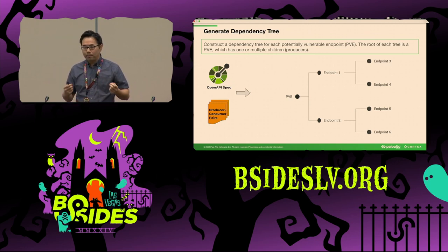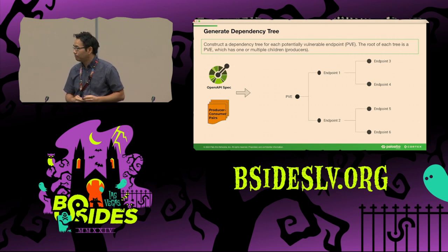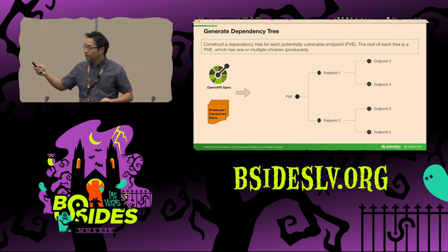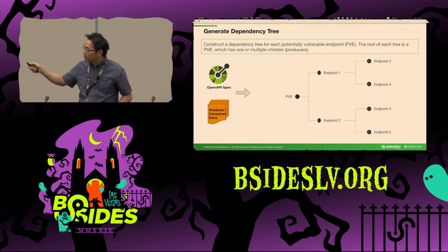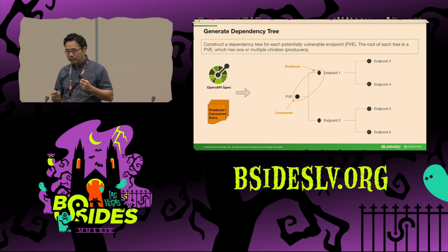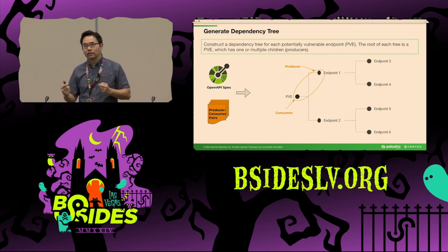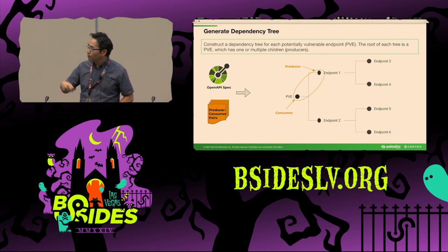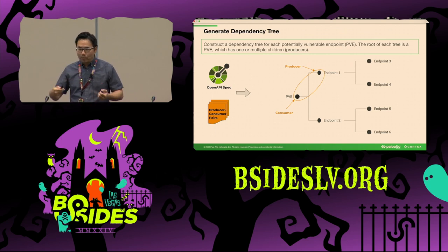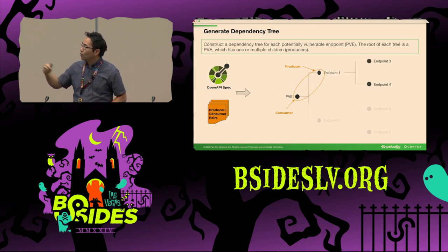The next stage turns the pairwise dependency relationships into a dependency tree for each target endpoint, with the root node representing the PVE. We create one dependency tree per target endpoint. Any two directly connected endpoints in the tree represent a consumer-producer relationship. The PVE is the parent node and consumer, while endpoint 1 is its child and producer. Endpoint 1's producers are endpoints 3 and 4.